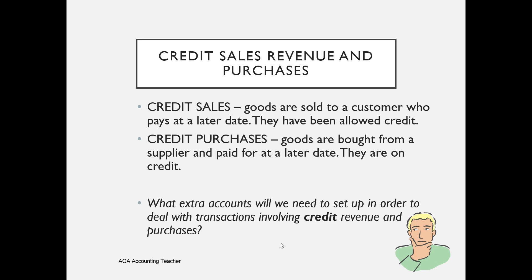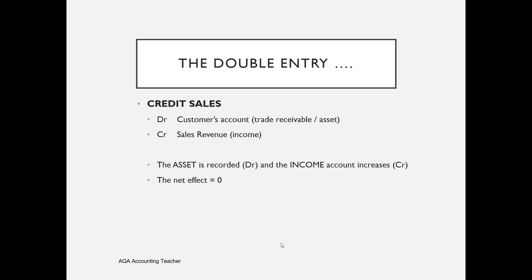When we deal with a credit sale, we debit the customer's account — we set up an account in the name of the customer and debit it to record the asset, the amount owed to the business — and we credit sales revenue, the income account. The net effect is still zero.